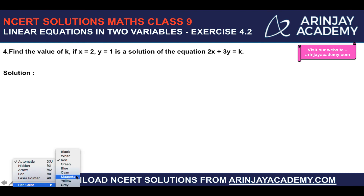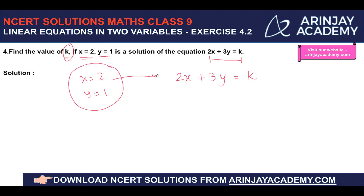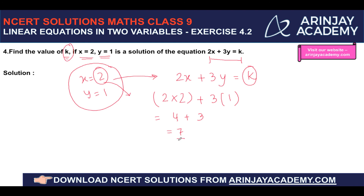This is a slightly different question: find the value of k if x equals 2 and y equals 1 is a solution of the linear equation 2x plus 3y equals k. If x equals 2 and y equals 1 is a solution, substituting gives 2 into 2 plus 3 into 1, which is 4 plus 3 equals 7. Therefore the value of k is 7.